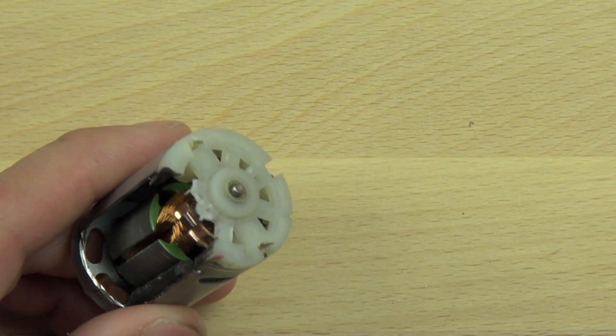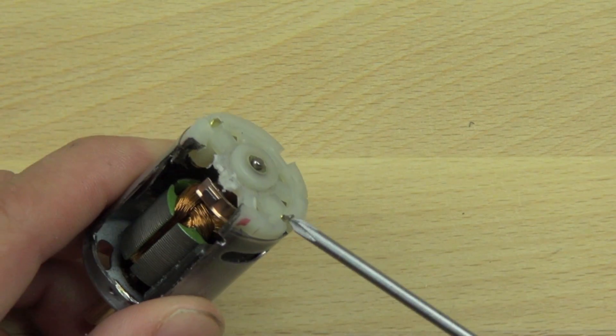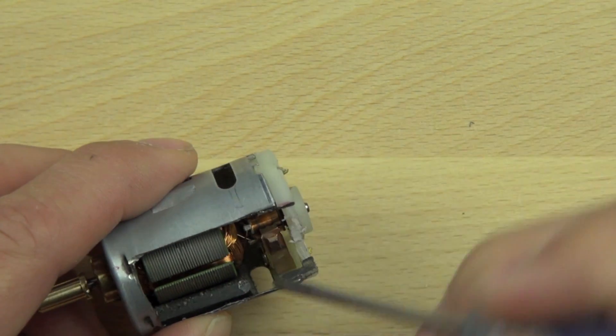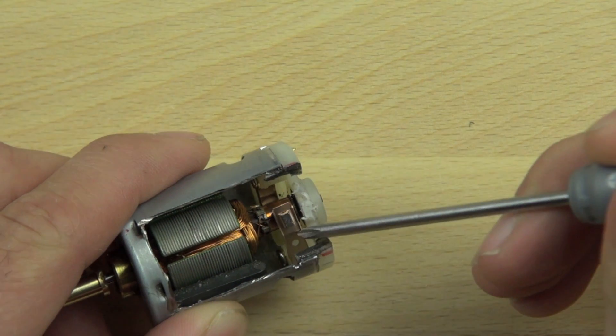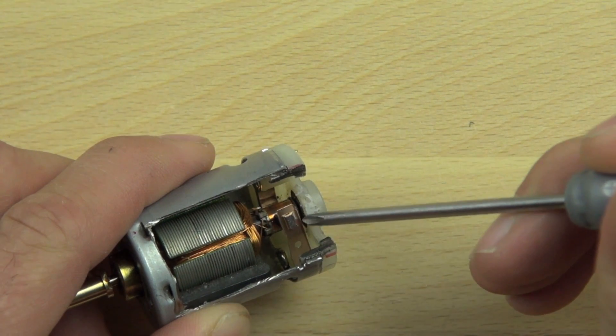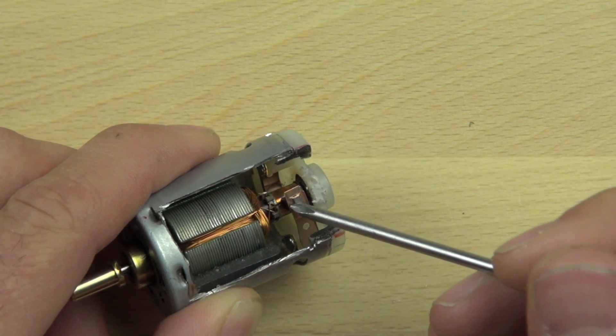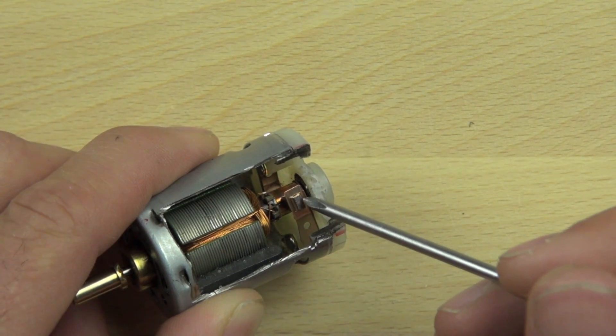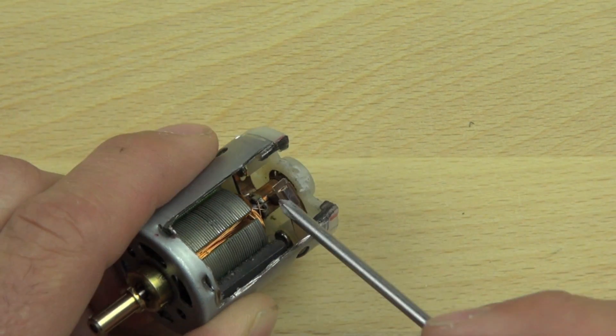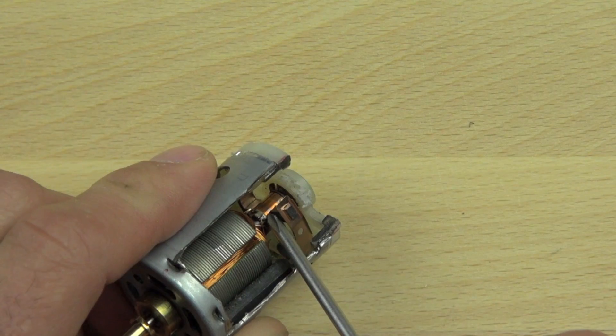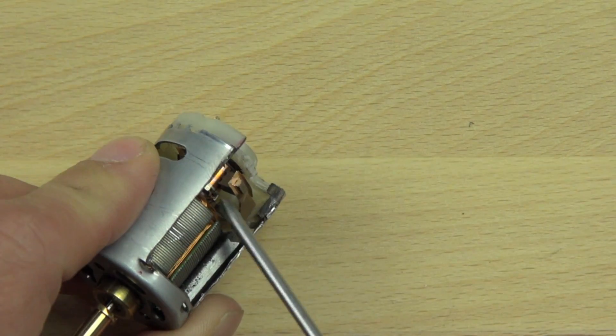So the electricity flows into the motor, comes in through this tab, flows through this pin, and then through this copper spring. And then it flows through this carbon electrode, it's called a brush.